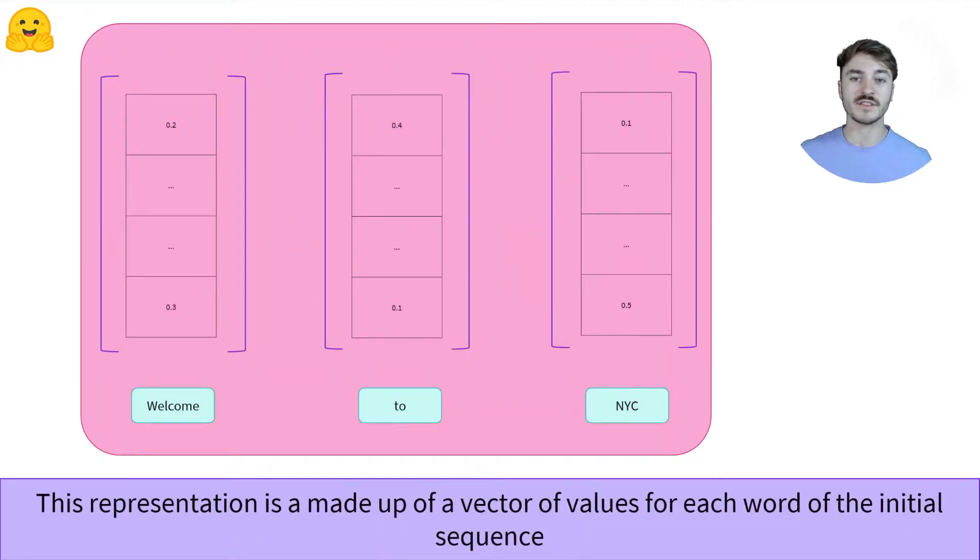Let's dive into this representation. It contains one vector per word that was passed through the encoder. Each of these vectors is a numerical representation of the word in question. The dimension of that vector is defined by the architecture of the model. For the base BERT model, it is 768.